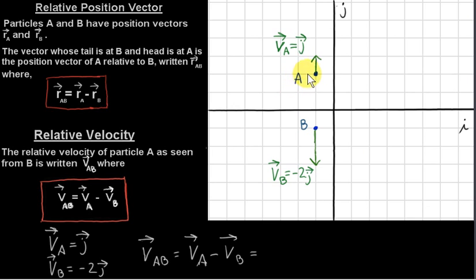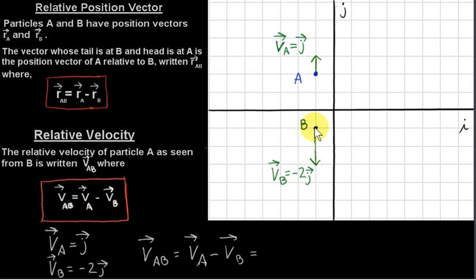Let's take another example. Suppose the velocity of particle A is plus 1J, meaning each second particle A moves one meter in the J direction. So in one second A is here, in another second A is here, and so on. Particle B has velocity minus 2J, so after one second particle B is here, after another second it's here, and so on.